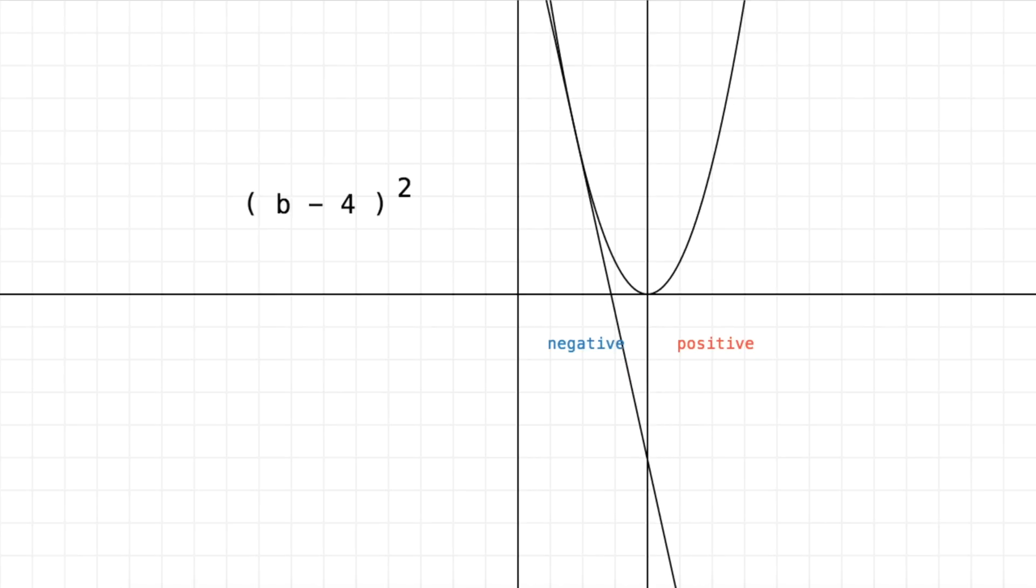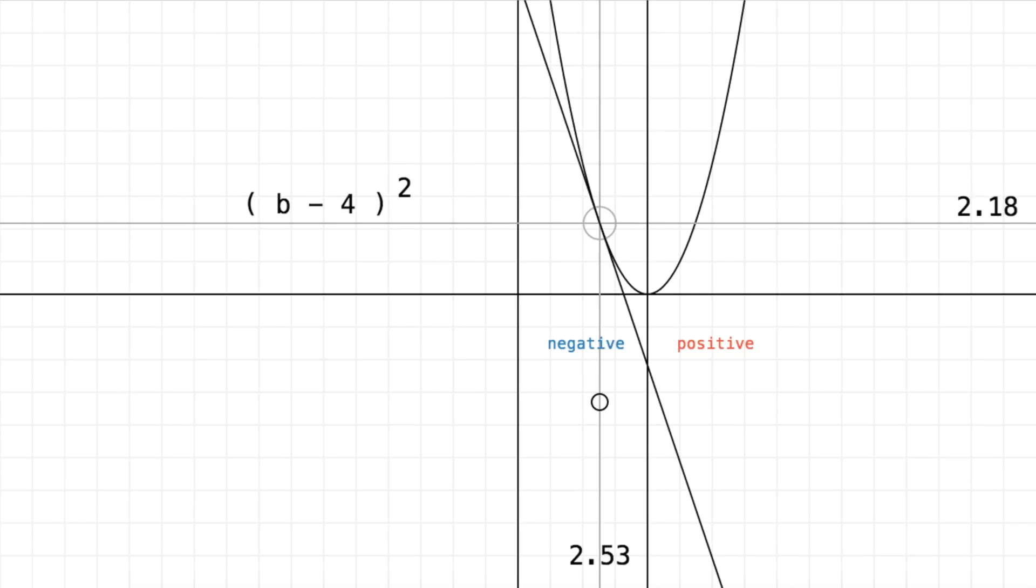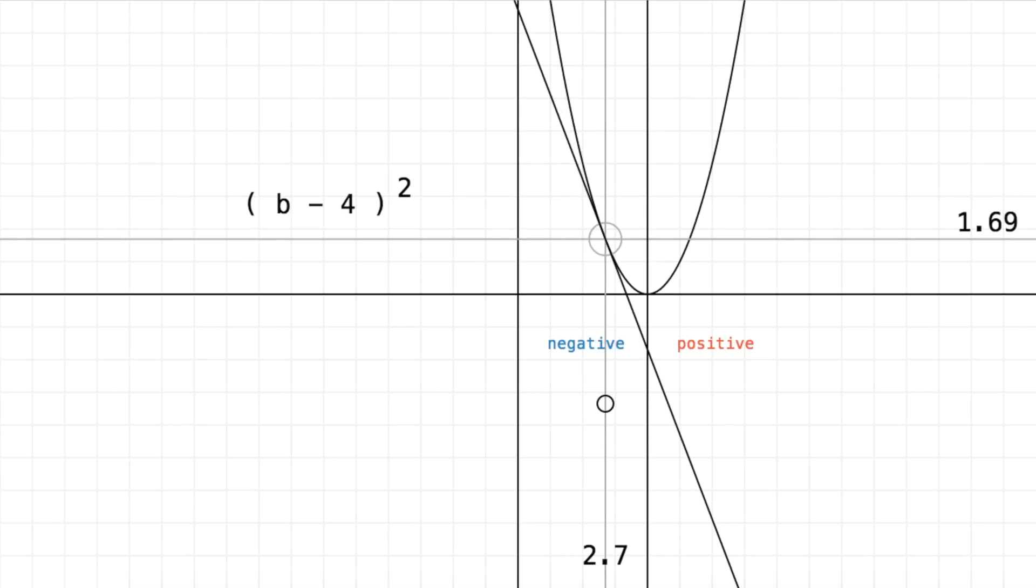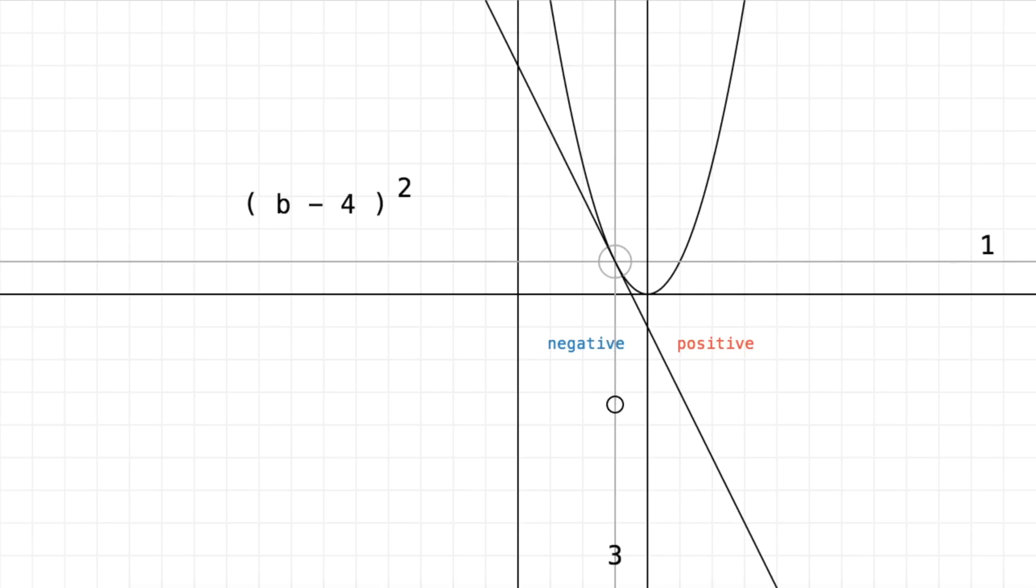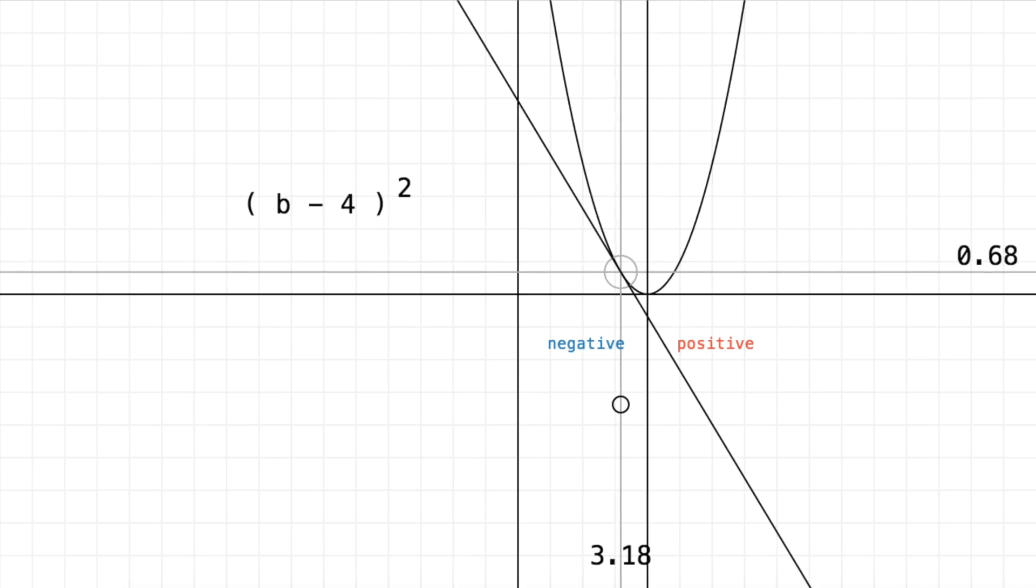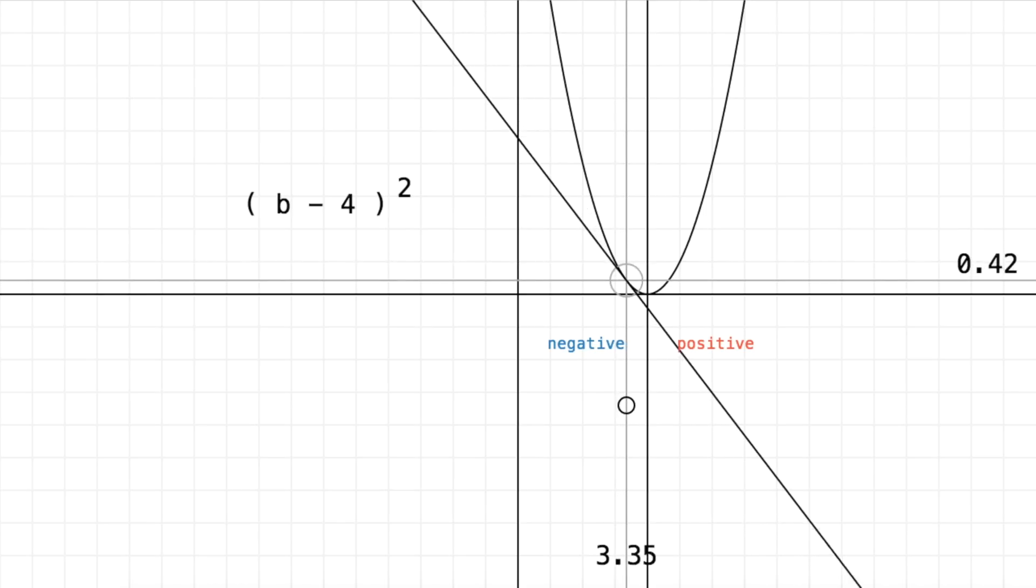So if b starts over here less than our target and we subtract a negative number we're going to move it closer to the target. We keep subtracting a negative number we're pushing it to the right. Subtracting a negative number is like adding a number to b. So we're going to push, push, push,